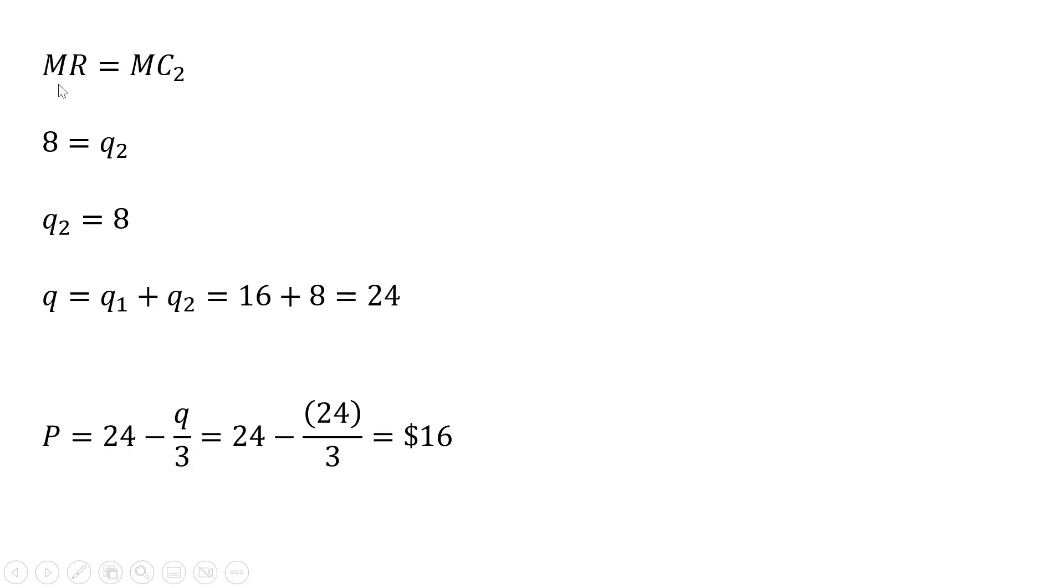As for the rest, setting marginal revenue equal to marginal cost in plant 2. Recall that the marginal cost in plant 2 just equaled Q subscript 2. So making the substitution, the firm will produce 8 units of output in plant 2. So overall, 16 units are coming from plant 1, 8 from plant 2.